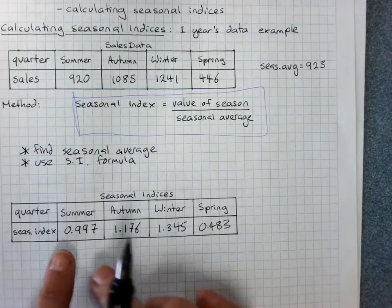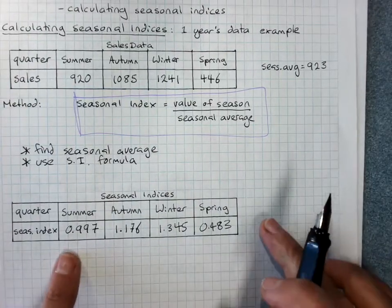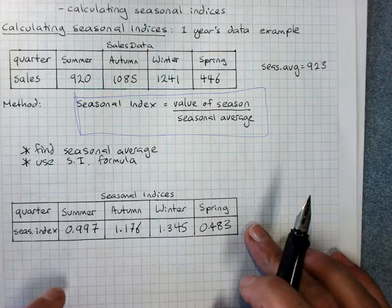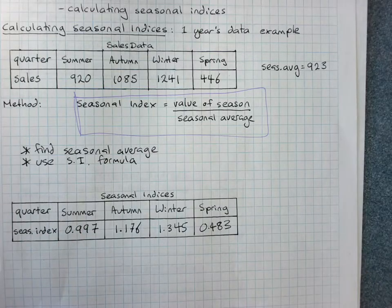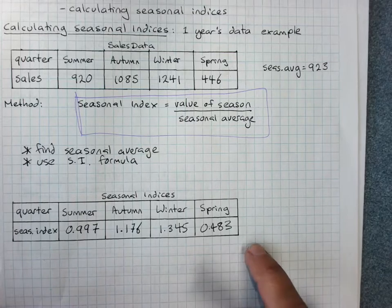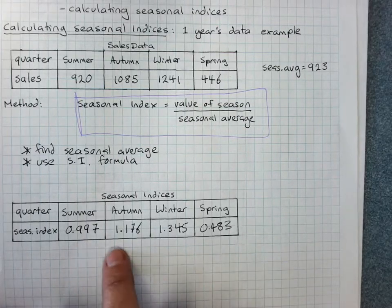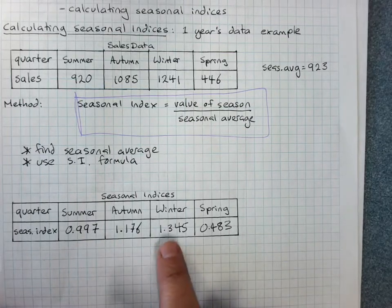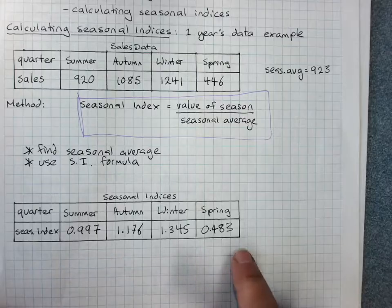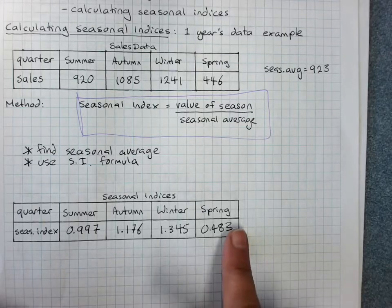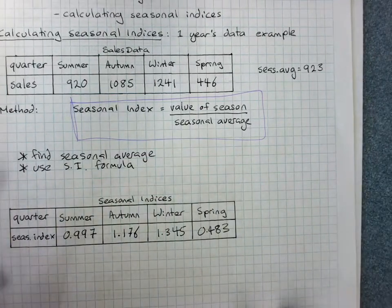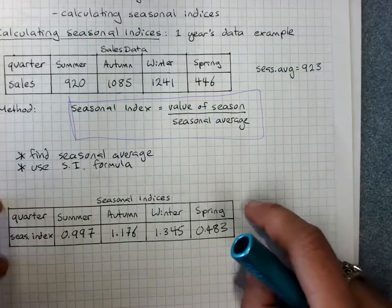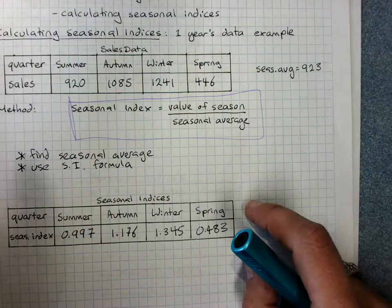Remember, these should come out to almost exactly the number of seasons, that is 4. Do a quick check with your calculator. Because we had to round, it may come out at 3.99 or something like that, and that's fine. So those are the seasonal indices for one year's data.